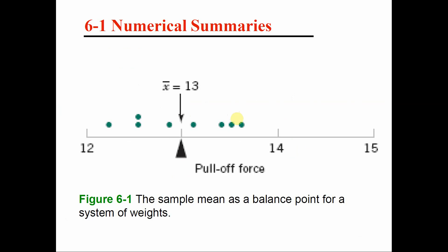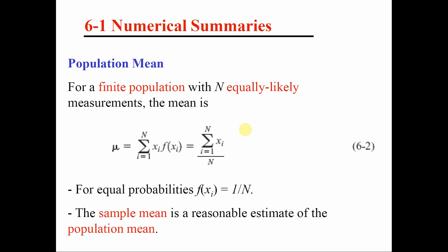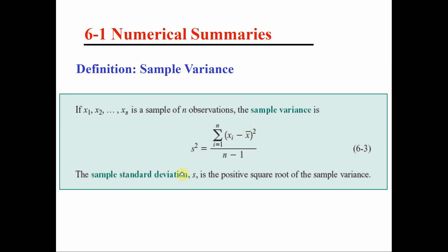How can you interpret the sample mean? If each green dot represents an observation in the sample — 1, 2, 3, 4, 5, 6, 7, 8 — the sample mean of 13 is the point on the number line that balances these observations. It's an average.